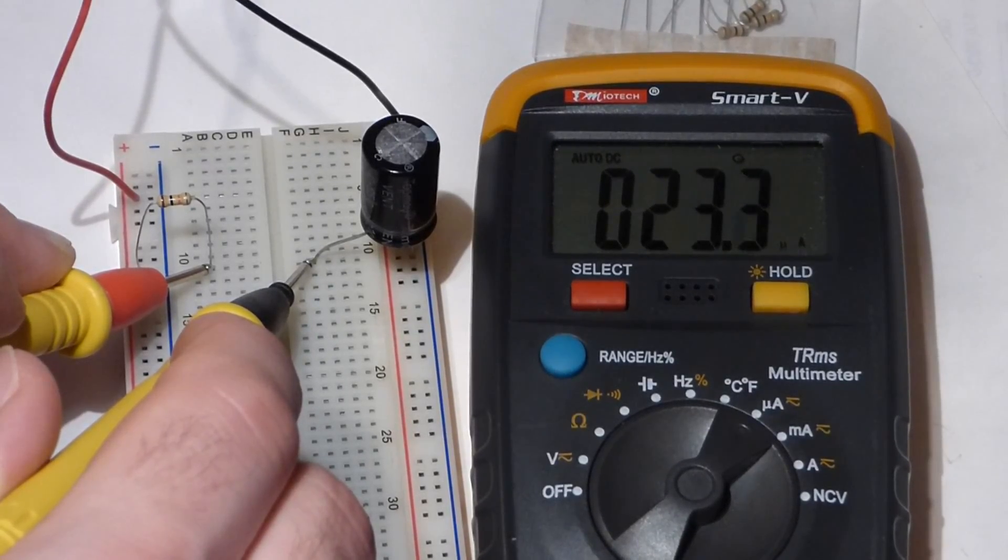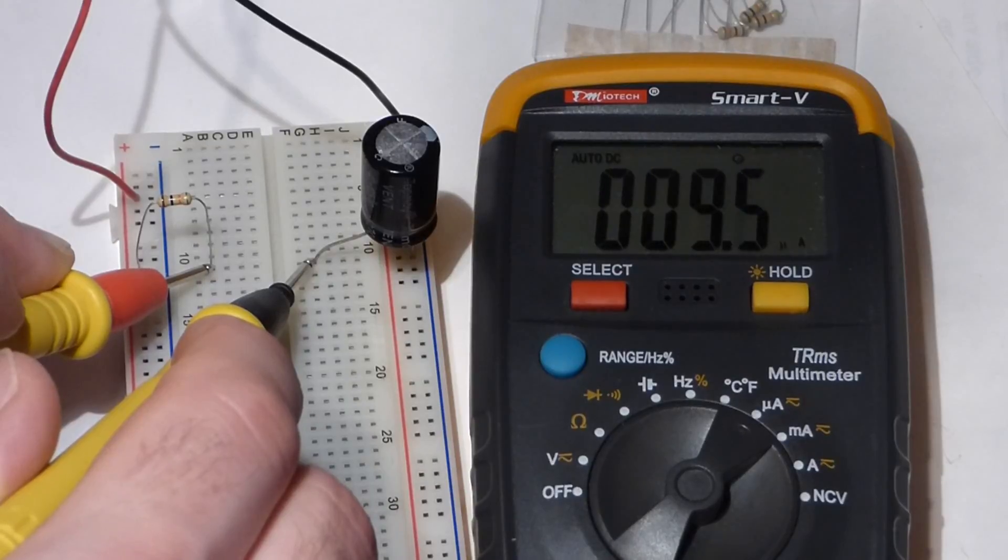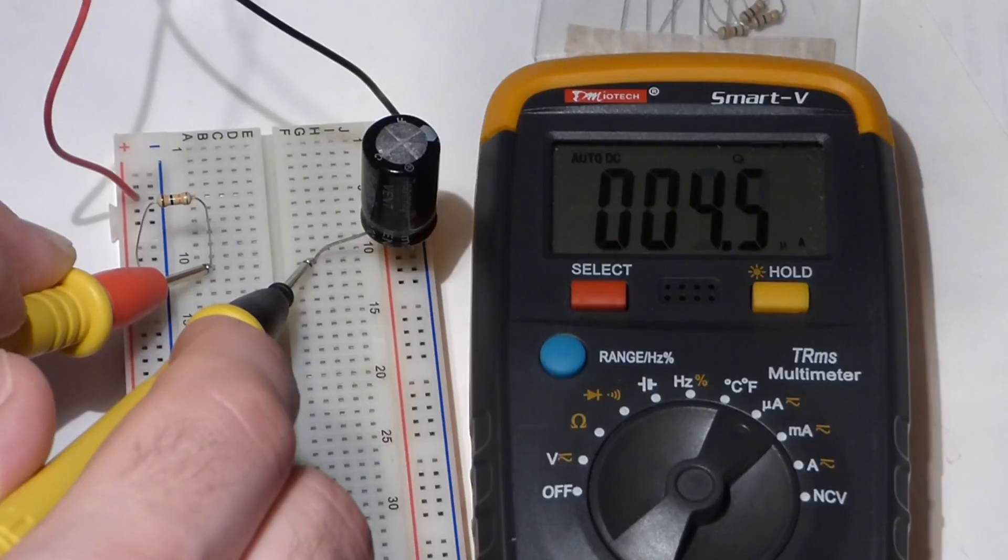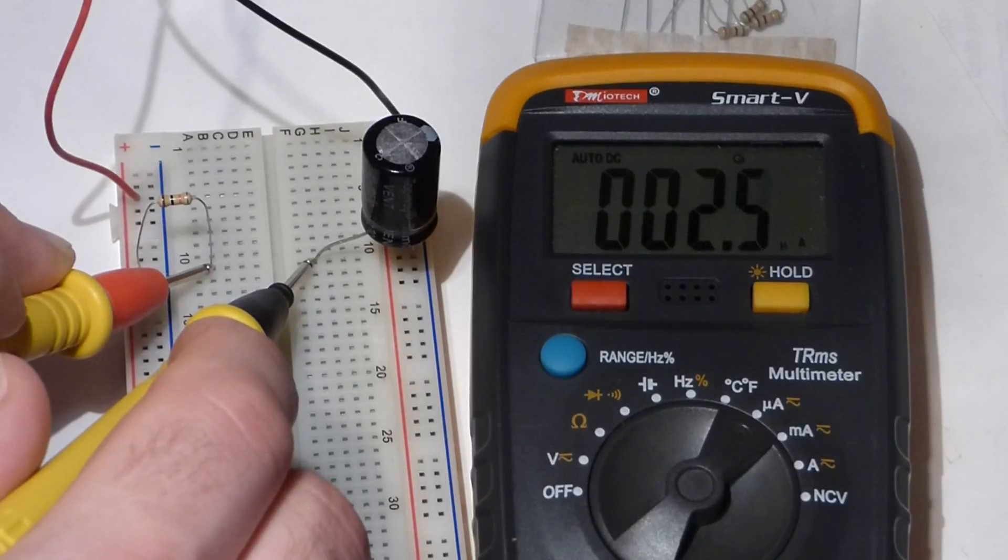Current's not going through as much as it was at the beginning. And that's one thing to know about capacitors. When you start charging them, they accept the charge really easily. They don't resist much. But as they get more charged, it takes longer to charge them even more. They resist the current.